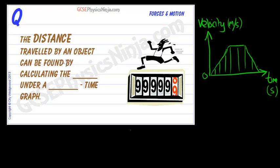So this flashcard is: the distance travelled by an object can be found by calculating the area under a velocity-time graph. Now I've used velocity here,